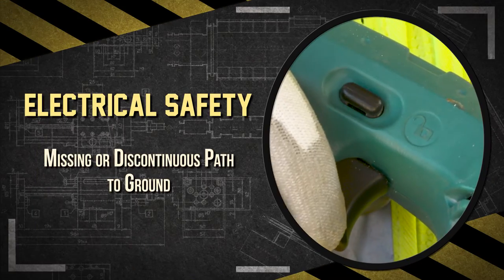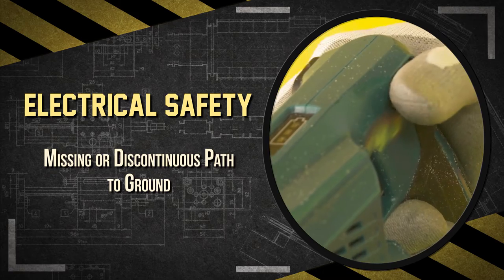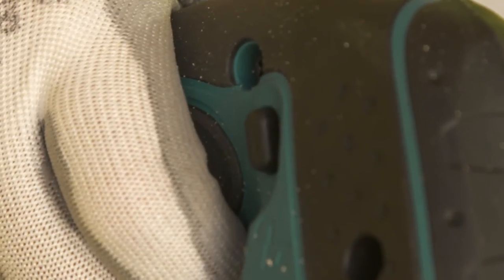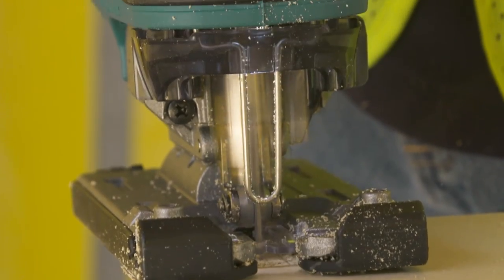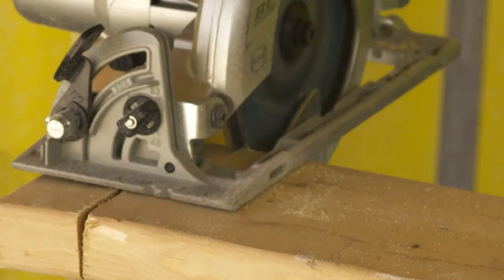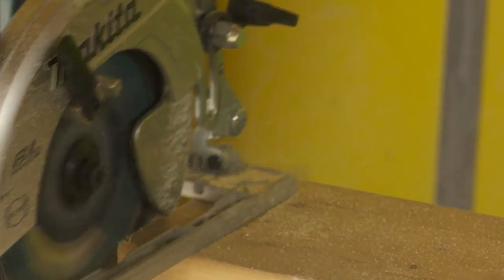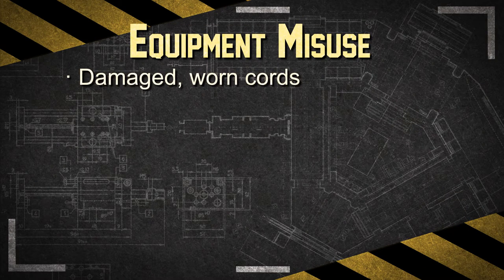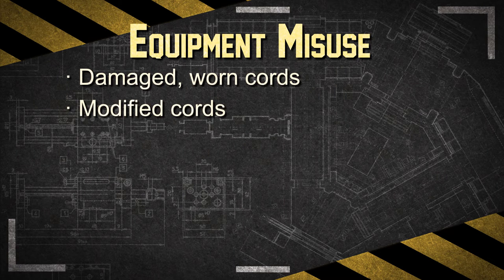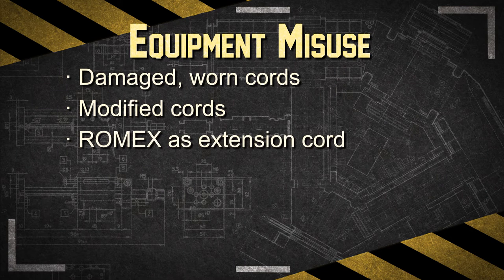Most electrical tools and equipment have safety features built into them by the manufacturer. However, if used in ways not intended by the manufacturer, operators of such equipment no longer rely on these features. Examples of misuse include using electrical cords or tools with worn or damaged insulation and exposed wires, using modified cords or tools that may be missing faceplates, ground pins, or insulation, and fabricating extension cords with Romex wire.